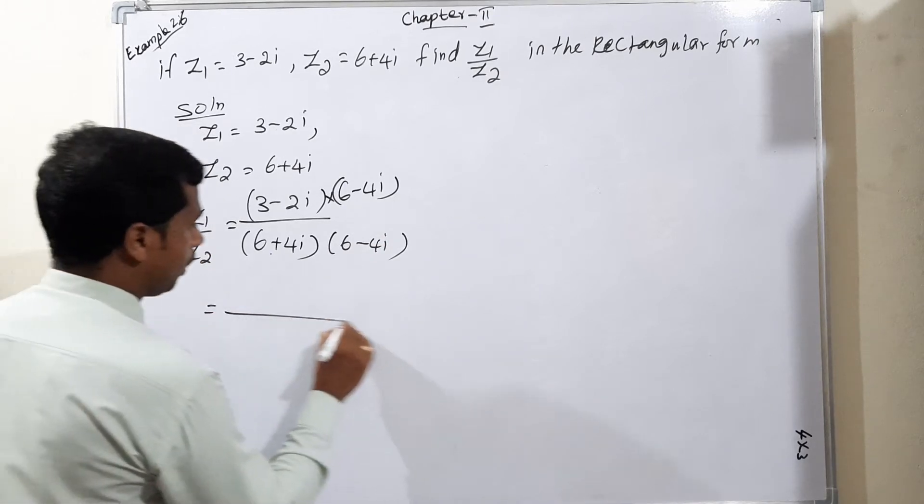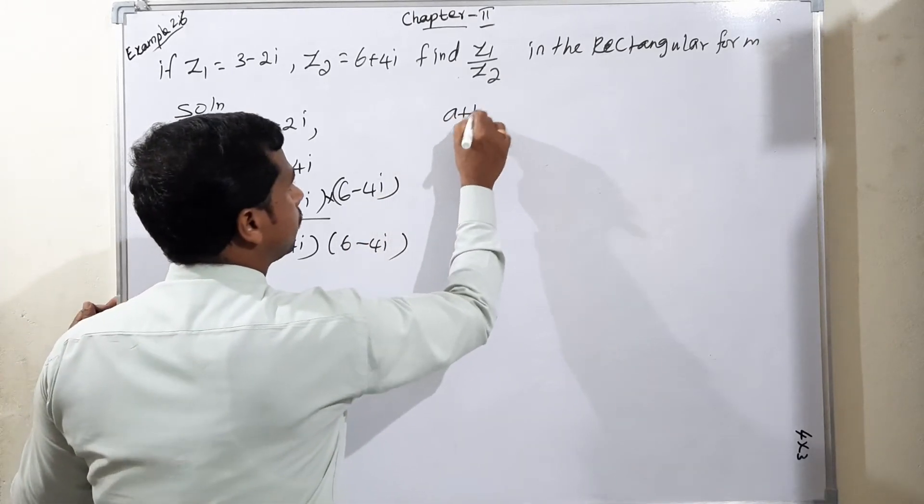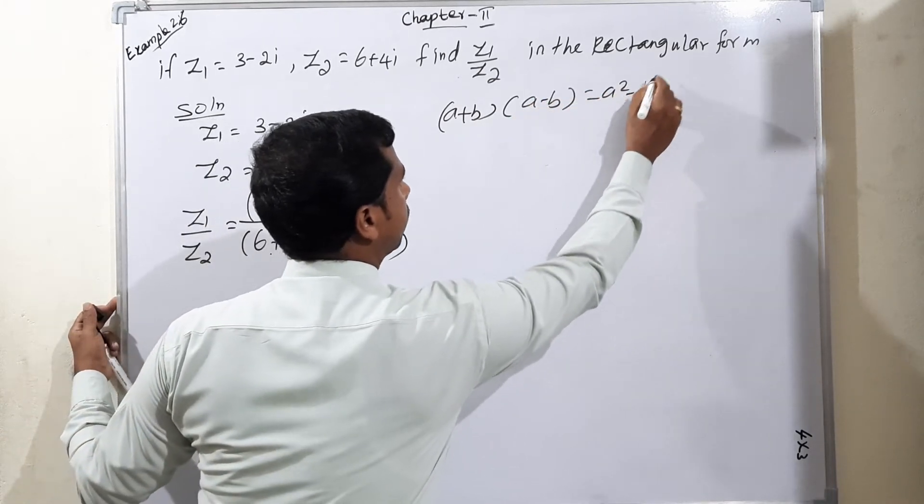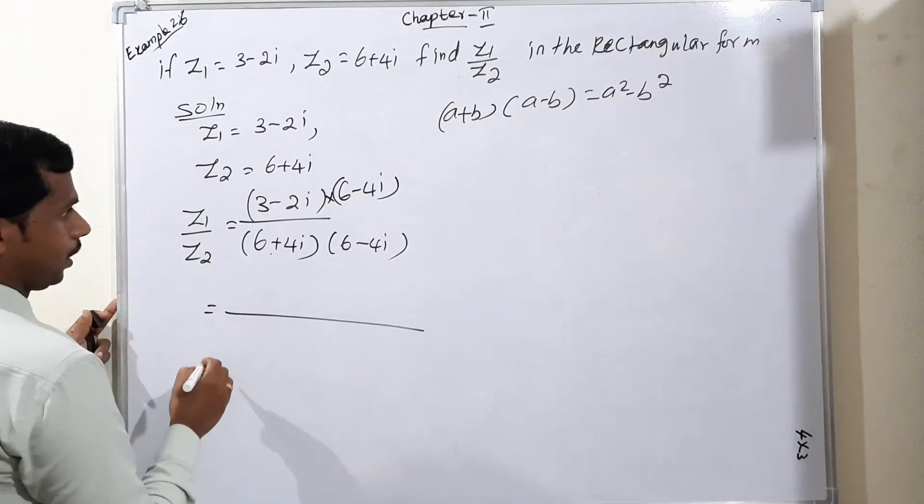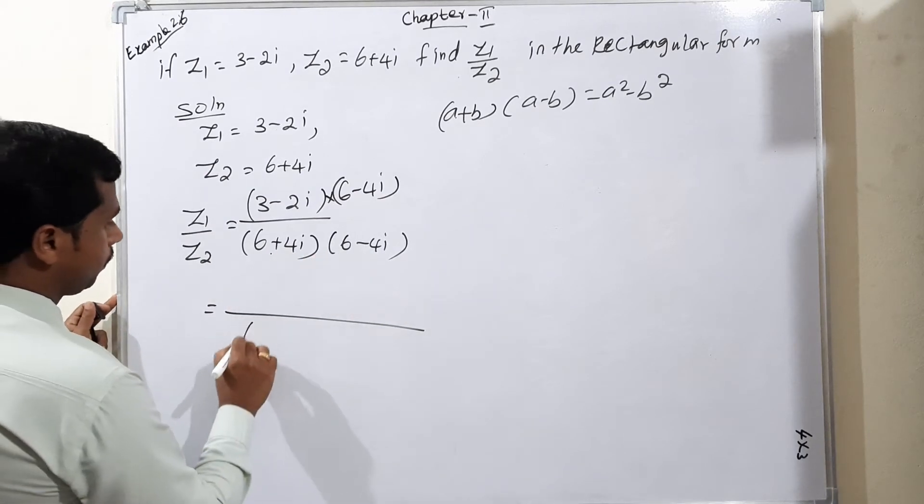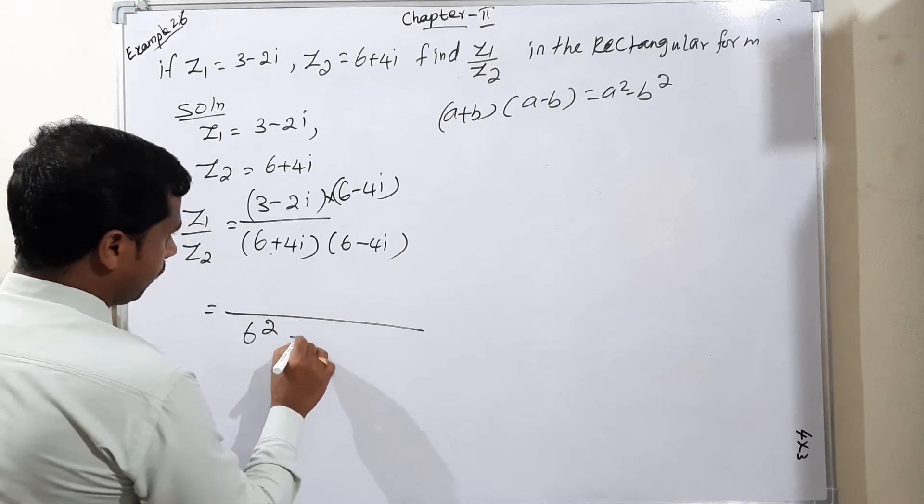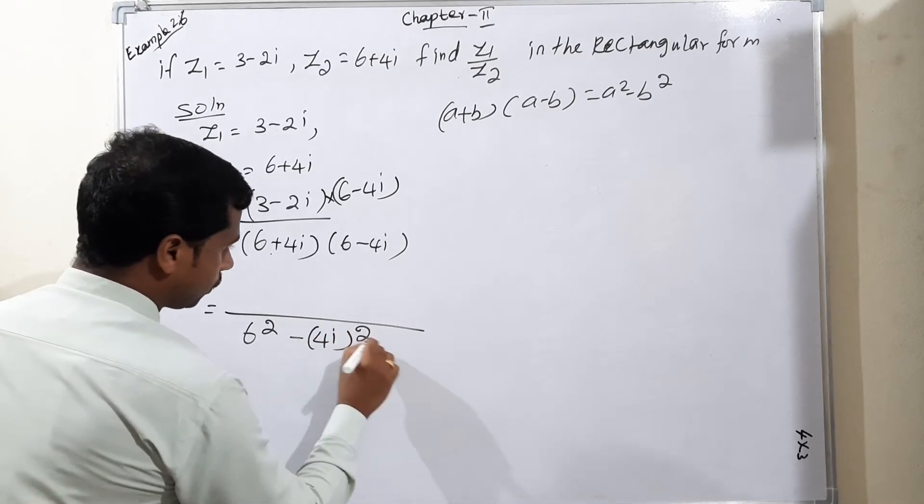Now the denominator is A plus B into A minus B form. A plus B into A minus B is equal to A square minus B square. So A square minus B square means actually 6 square then minus 4i the whole square.